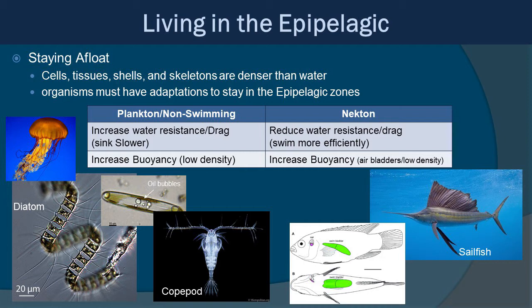On the right side, we have nekton — essentially animals big enough to swim around. They usually reduce water resistance and drag while swimming, meaning swimming more efficiently. Many fish are streamlined or fusiform in shape and have lunate tails like this sailfish. That efficiency in swimming helps keep them up in the water column. A lot of fish in the epipelagic also have air bladders that compensate for buoyancy.